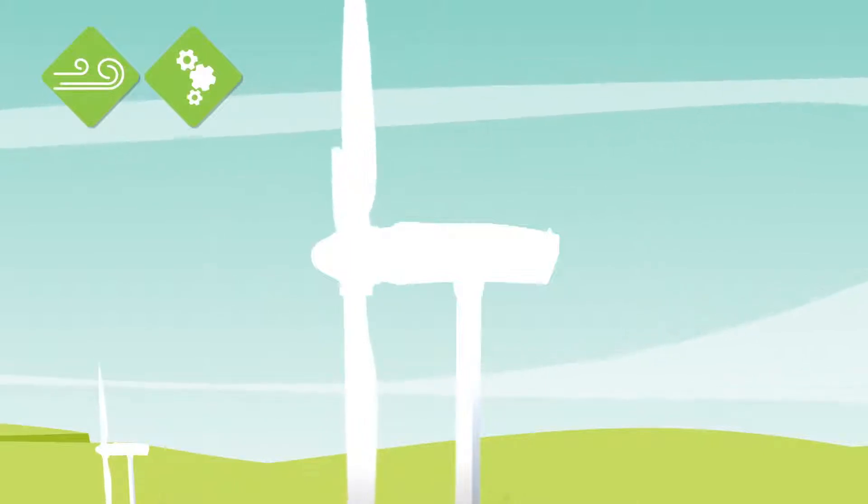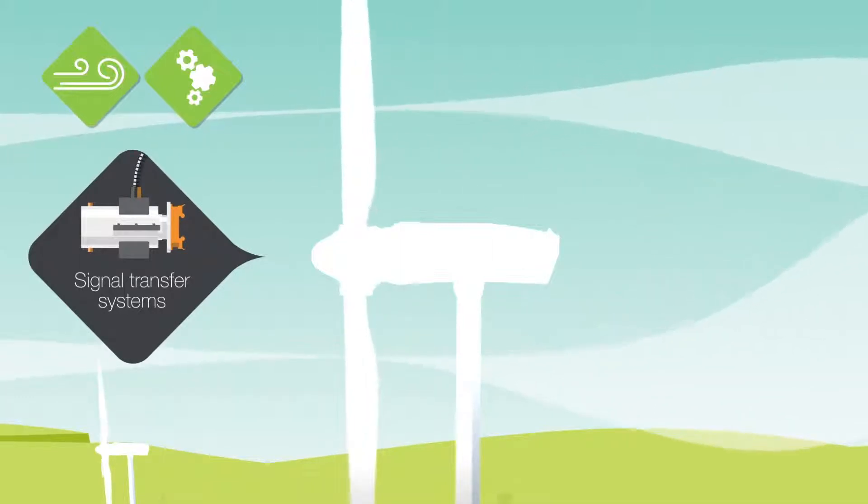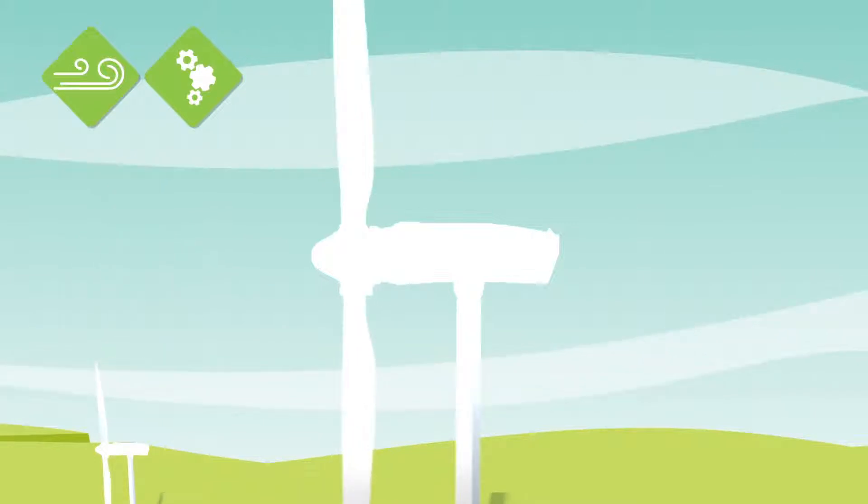Because the intensity and direction of the wind is constantly changing, dedicated systems turn the nacelle to face the wind and change the blade angle to achieve optimal performance. Mersen develops signal transfer systems that work with the blade orientation system to ensure high generator efficiency.